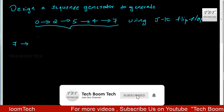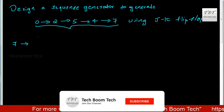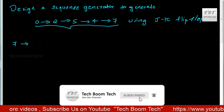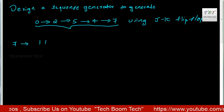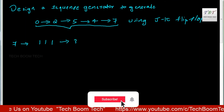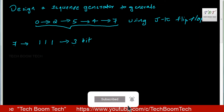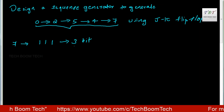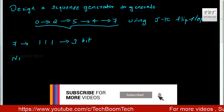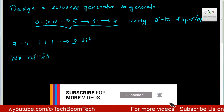The minimum number of binary bits needed to represent seven is three bits: 1, 1, 1. Therefore, we conclude that the number of flip-flops required is equal to 3.